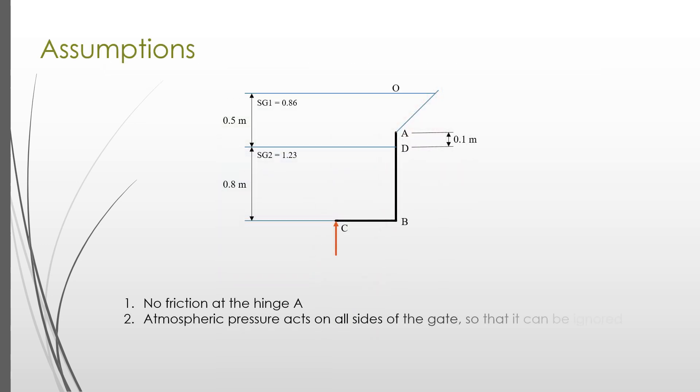This problem involves a hinge at point A. We are going to assume that there is no friction at the hinge, so that there is no reaction moment at A. We also assume that atmospheric pressure acts on all sides of the gate, so that it can be ignored. The weight of the gate is not mentioned in the problem. Hence, we assume that its value is negligible.